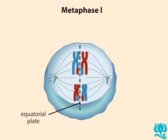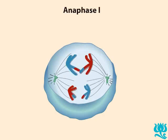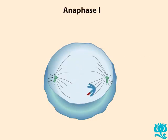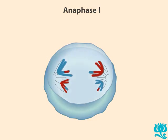At metaphase 1, homologous chromosomes have lined up on the equatorial plate in a pairwise fashion, with one homologue on either side of the plate. Note that the chromosomes assort independently. For example, the maternal chromosomes align randomly, not necessarily on the same side of the plate. During anaphase 1, chromosomes from each pair move to opposite poles of the cell. The centromeres of the chromosomes do not divide, so each chromosome still consists of two sister chromatids, which now may not be genetically identical due to crossing over.